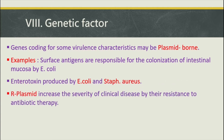Another example is the R-plasmid, or resistance plasmid, which is responsible for drug resistance. The R-plasmid increases the severity of clinical disease by conferring resistance to antibiotic therapy. When bacteria acquire resistance to more than one antibiotic through such plasmids, they become resistant to multiple antibiotics, making treatment difficult and allowing them to establish infection more easily.